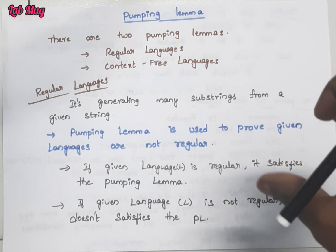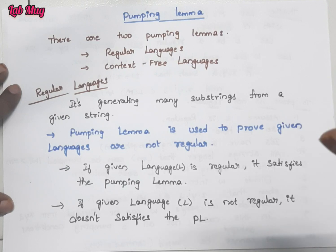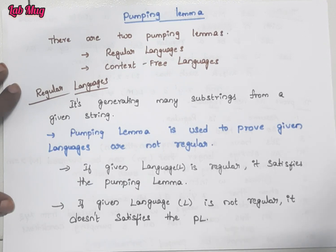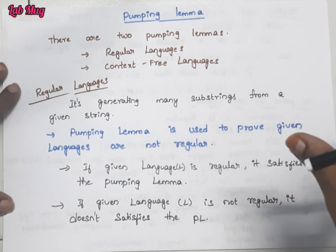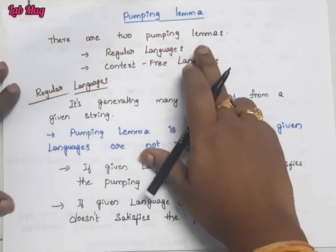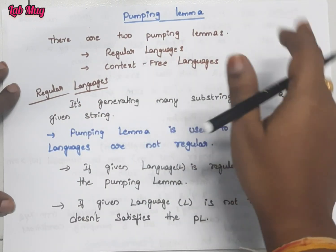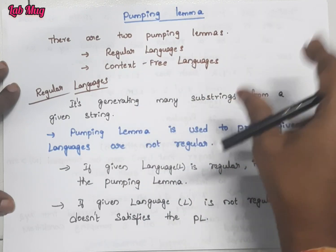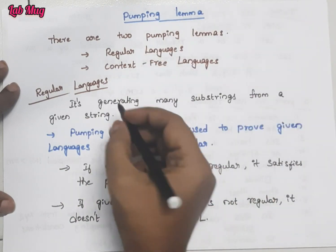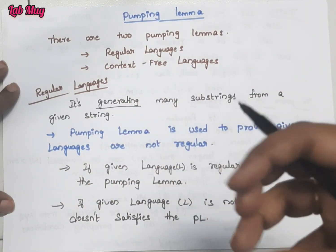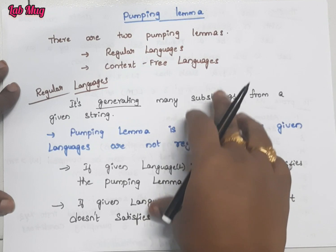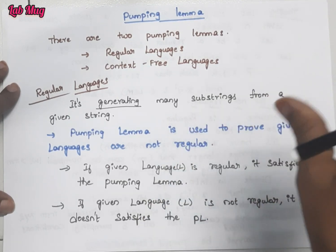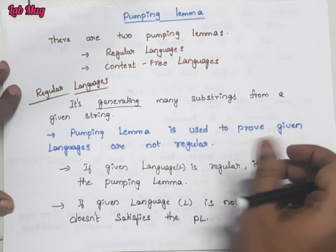Ela access chestham and ela use chestham ane di ippudu chuddam. Ikkada concentration tho vinali, because contradiction ane concept tho manam dhinni prove cheskodaniki jarugutundi. So don't skip any second here. Skip chesthe topic confusing ga untundi. Regular languages ki sambandhinci first clear cheskonam with pumping lemma. Next classes lo context free languages kuda chuddam. So pumping means it is generating — okka string nundi number of substrings generate chedam koosam ee pumping lemma concept use chestham with regular concept.